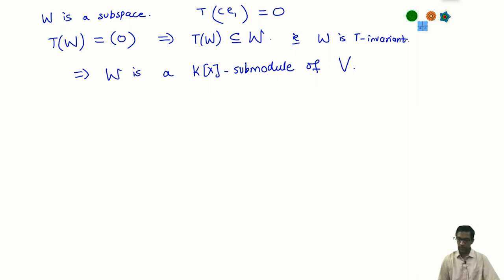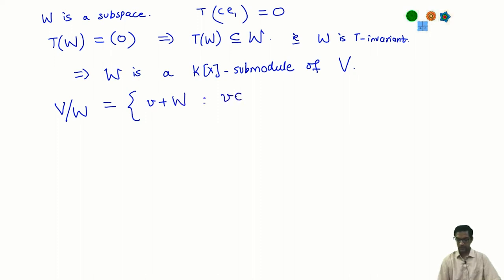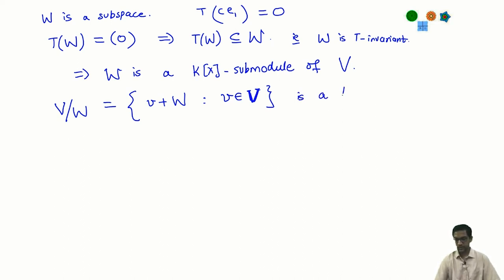Now let us look at what the quotient looks like. We have a submodule W of V, so we can consider the quotient space V/W. Its elements are of the form v+W with v in V. By the general construction, this quotient space also has a k[x]-module structure. A k[x]-module is a vector space together with a linear operator, so the question is: what is the linear operator, i.e., how does x act on V/W?